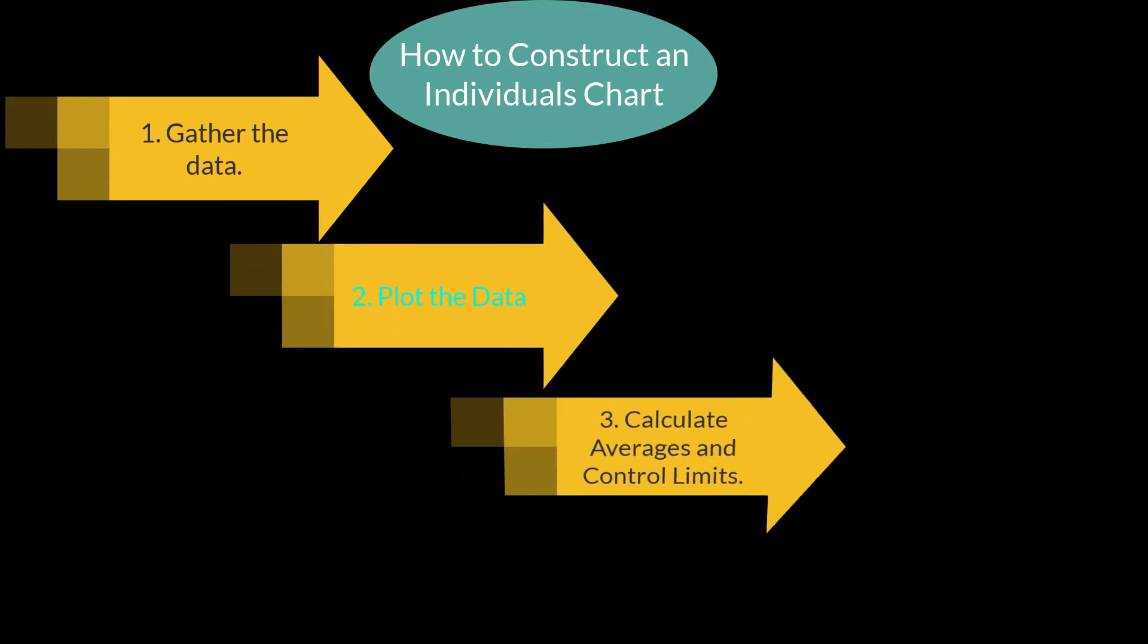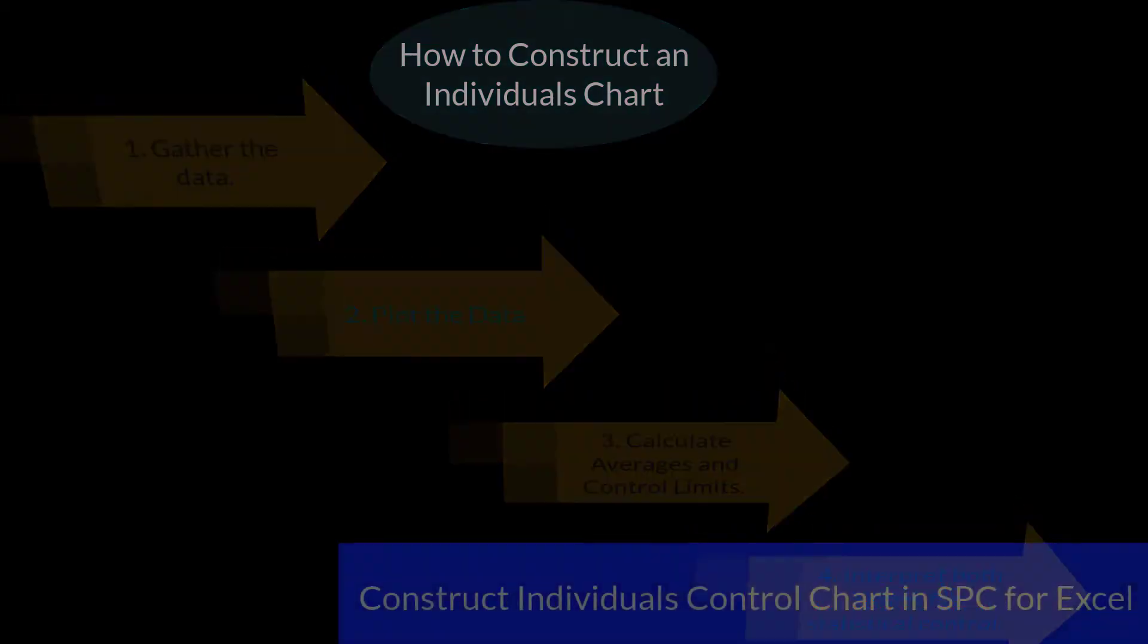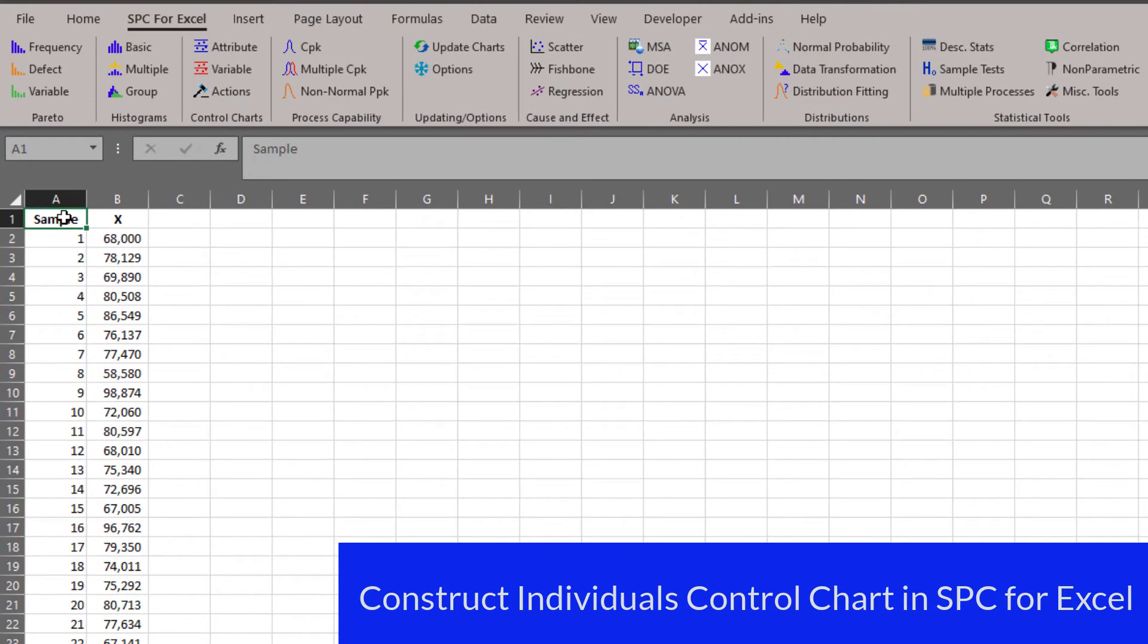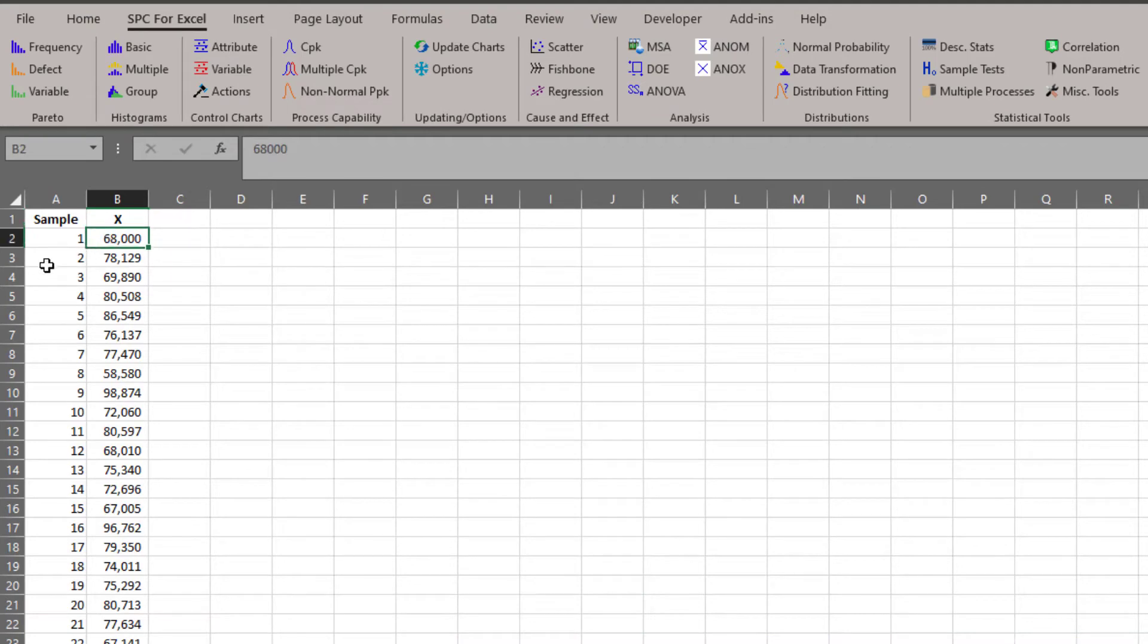So how do you construct an individuals control chart? The steps are the same for all charts: gather the data, plot the data, calculate the averages as the control limits, and then interpret the charts. We're going to take a look at how you use the SPC for Excel software to generate an individuals control chart. Here, our example is we're tracking weekly, maybe the accounts receivable each week. The first week it's $68,000. The second week is $78,129. But here's your individual data points over time. Those are entered into an Excel spreadsheet to use the SPC for Excel software.